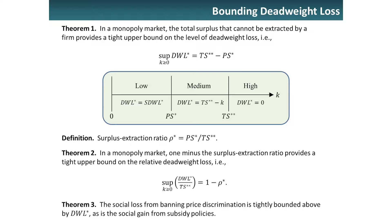Why is rho star interesting? Theorem one: in a monopoly market, the total surplus that cannot be extracted by a firm — first-best surplus minus what the firm extracts — is a tight upper bound on the level of deadweight loss. To see this, consider arraying values of K from zero up to infinity, which gives us a partition into three cases.